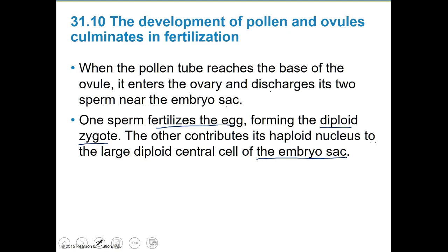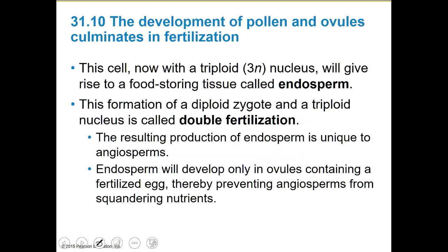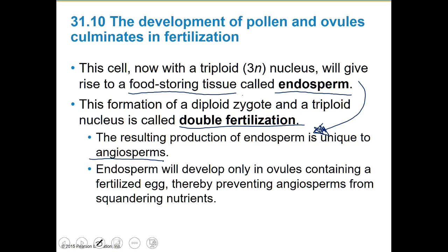The other sperm contributes to the large central cell of the embryo sac, which is a food source to help the zygote develop. That's double fertilization. This cell, now triploid in its nucleus, will give rise to the food-storing tissue called the endosperm. The resulting production of endosperm is unique to angiosperms. Endosperm would develop only in ovules containing a fertilized egg, therefore preventing angiosperms from wasting nutrients. It's a good developmental strategy.